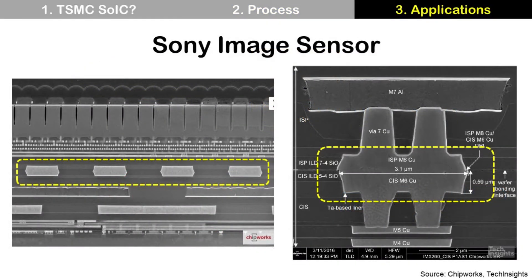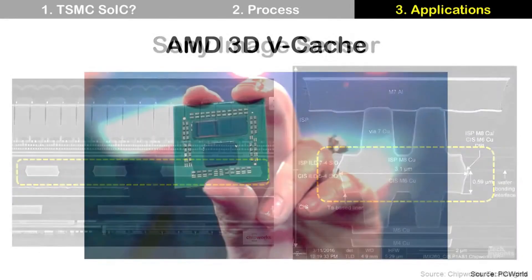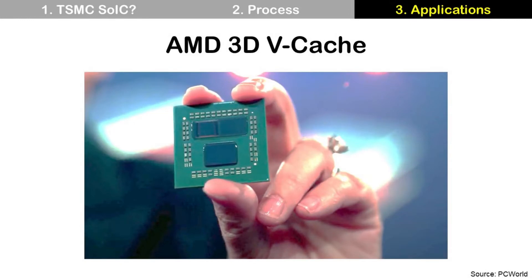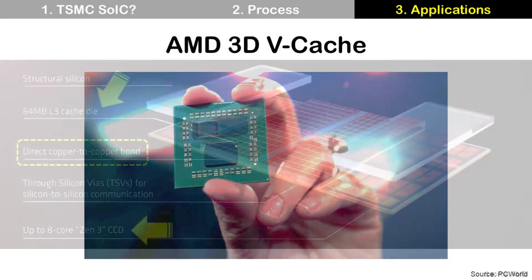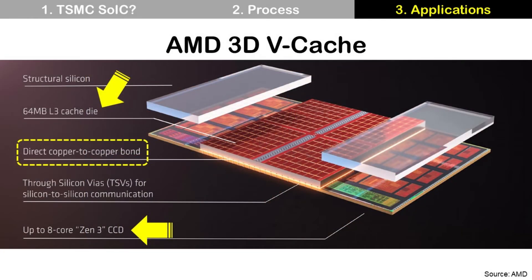Copper-to-copper hybrid bonding is used for Sony image sensors, but it is wafer-to-wafer bonding rather than chip-to-chip bonding. Last month, AMD announced a prototype sample called AMD 3D V-Cache at Computex 2021 in Taiwan. It seems this product uses TSMC SOIC technology. AMD 3D V-Cache connects the processor chip at the bottom with L3 cache SRAM memory on top using copper-to-copper hybrid bonding. This technology is developed for gaming but will be used for high-performance computing in the future.